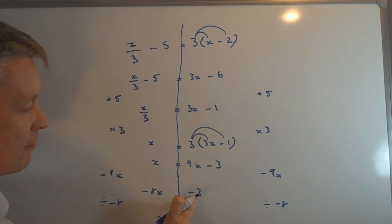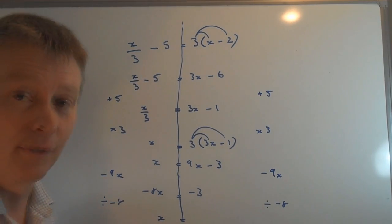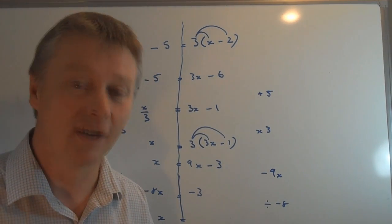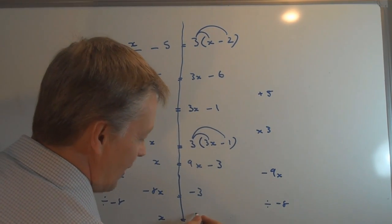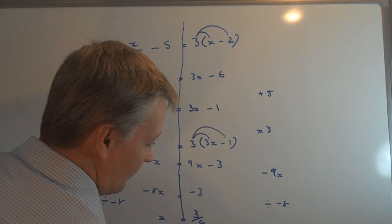And on this side, minus 3 divided by minus 8 is a minus number divided by minus number is a positive number. So minus 3 divided by minus 8 is 3 eighths.